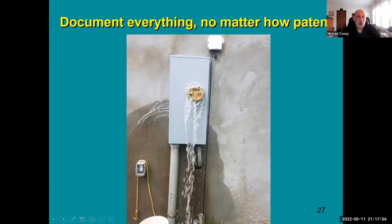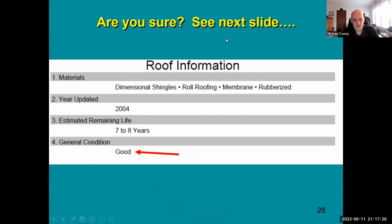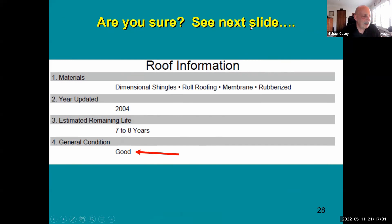Jim Bond confirmed: they couldn't get the service cable into the conduit, so they cut the top of the conduit off even with the grade. That's what caused the water intrusion.